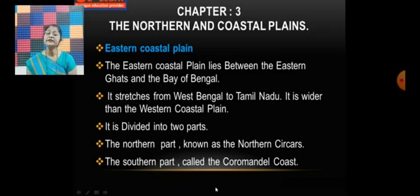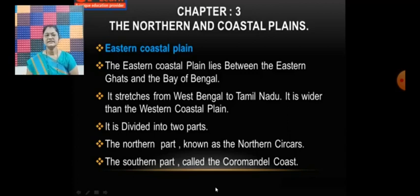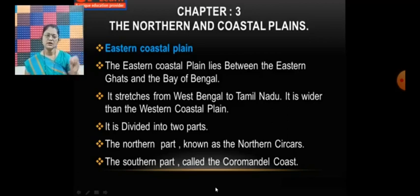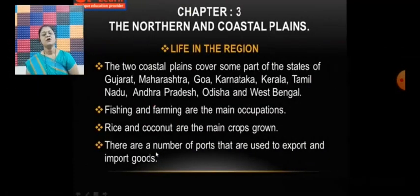The eastern coastal plain is divided into two parts. The northern part is known as the Northern Sirkars, and the southern part is called the Coromandel coast.